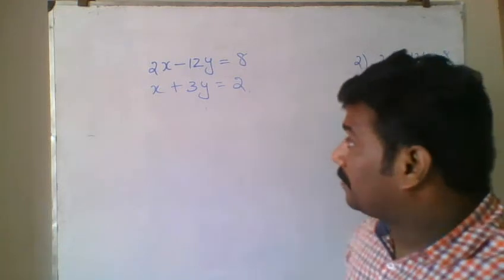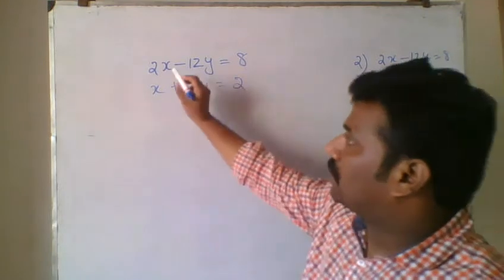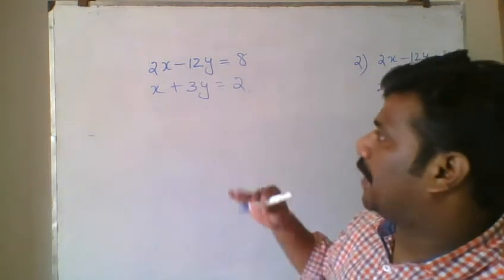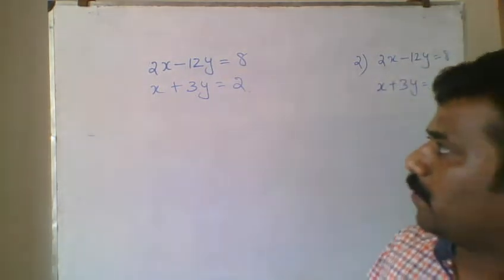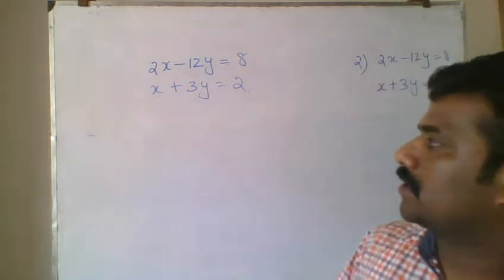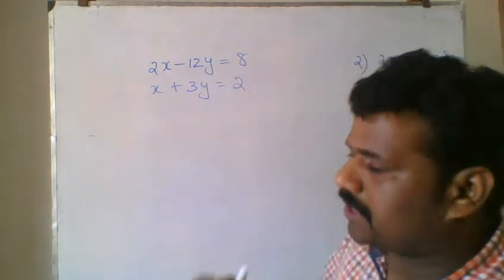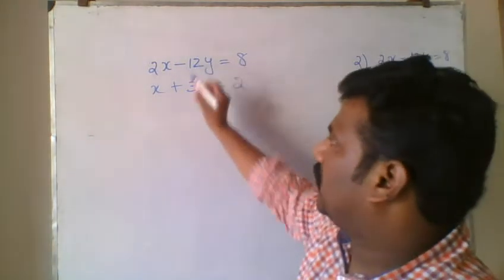Then we can move to the second question. Second question is 2x minus 12y is equal to 8, then x plus 3y is equal to 2. We can apply the same method as in the previous question.